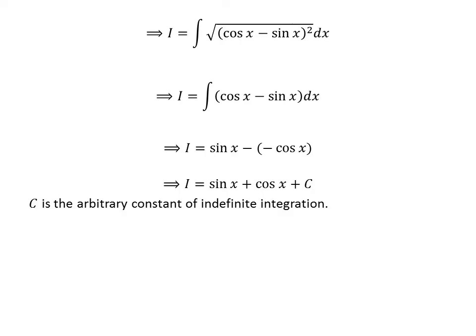The anti-derivative of cosine of x is sine of x, and the anti-derivative of sine of x is minus cosine of x. So, integration of square root of 1 plus sine of 2 times x is equal to sine of x plus cosine of x, and then we add capital C as an arbitrary constant of indefinite integration. Never forget to add this constant.